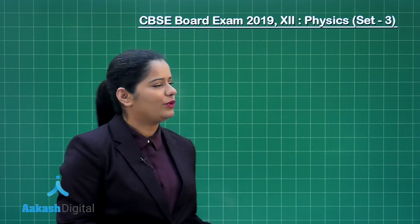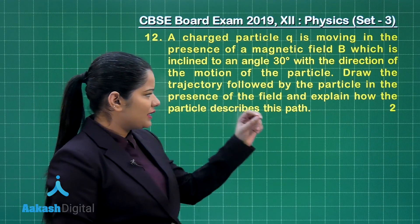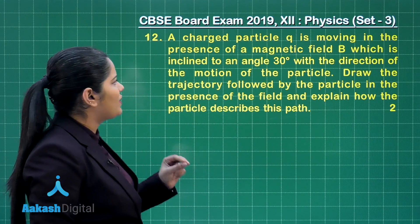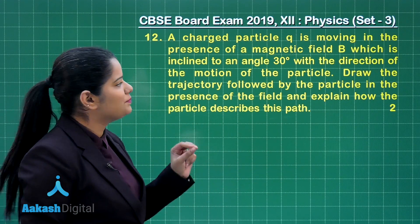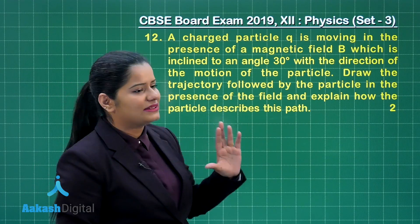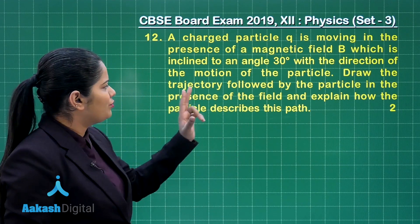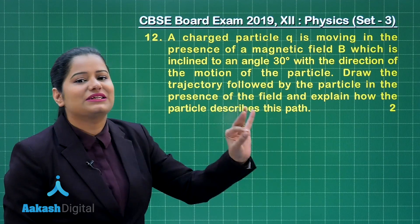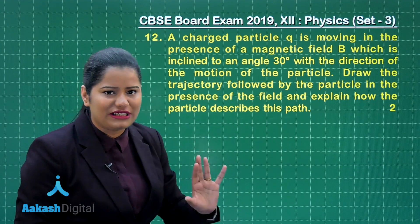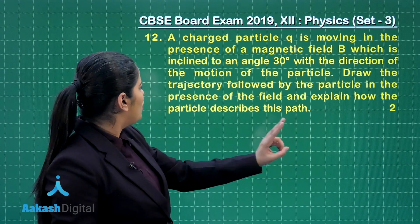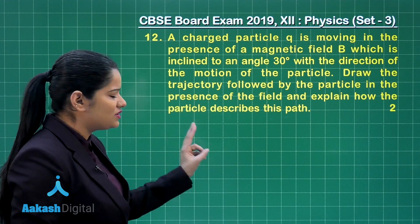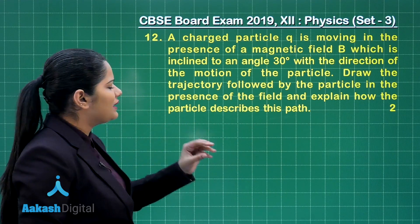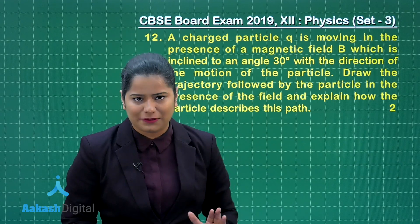Now let us take up question number 12, which is again worth two marks. This question says a charged particle Q is moving in the presence of a magnetic field B, which is inclined at an angle of 30 degrees with the direction of motion of the particle. The question wants you to draw the trajectory followed by the particle and explain how the particle describes this path.